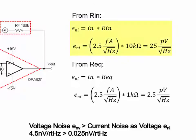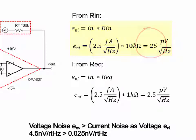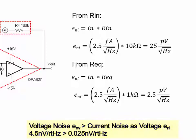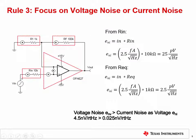In this example, the input resistance is 10 kilohms and the current noise density is 2.5 femtoamps per root hertz. Just multiply the input resistance by the noise current density to calculate the equivalent voltage noise density, which turns out to be 25 picovolts per root hertz. This is very small compared to the 4.5 nanovolts per root hertz voltage noise for the OPA627. One objective of this step is to make sure that you are using the right type of device — you may consider a CMOS or JFET device if the feedback or source resistance is large.